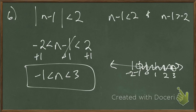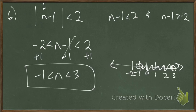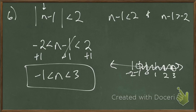n needs to be less than 3 but greater than negative 1 to satisfy the inequality. On a number line: open circles at negative 1 and 3, with everything in between. Check your answer — pick 0: 0 minus 1 is negative 1; the absolute value of negative 1 is 1, which is less than 2. My advice instead of memorizing 'less than means and, greater than means or' is to use reasoning to build your inequalities — test what works and what doesn't, and you'll never mess up that rule.